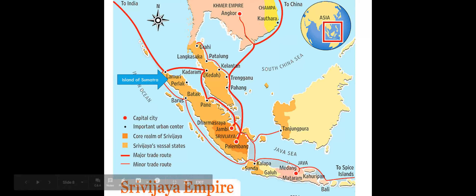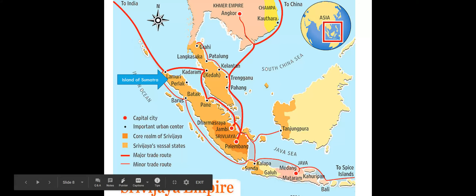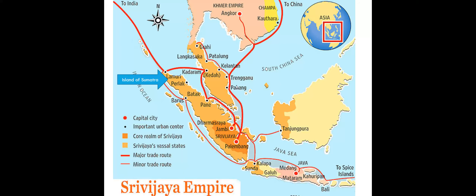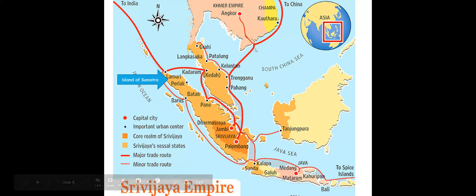This kingdom thrived because of its fantastic ports for Indian Ocean trade. There was another kingdom called the Kingdom of Funan, and when Srivijaya rose, Funan collapsed unintentionally, because Funan had only one or two ports while Srivijaya offered many more.